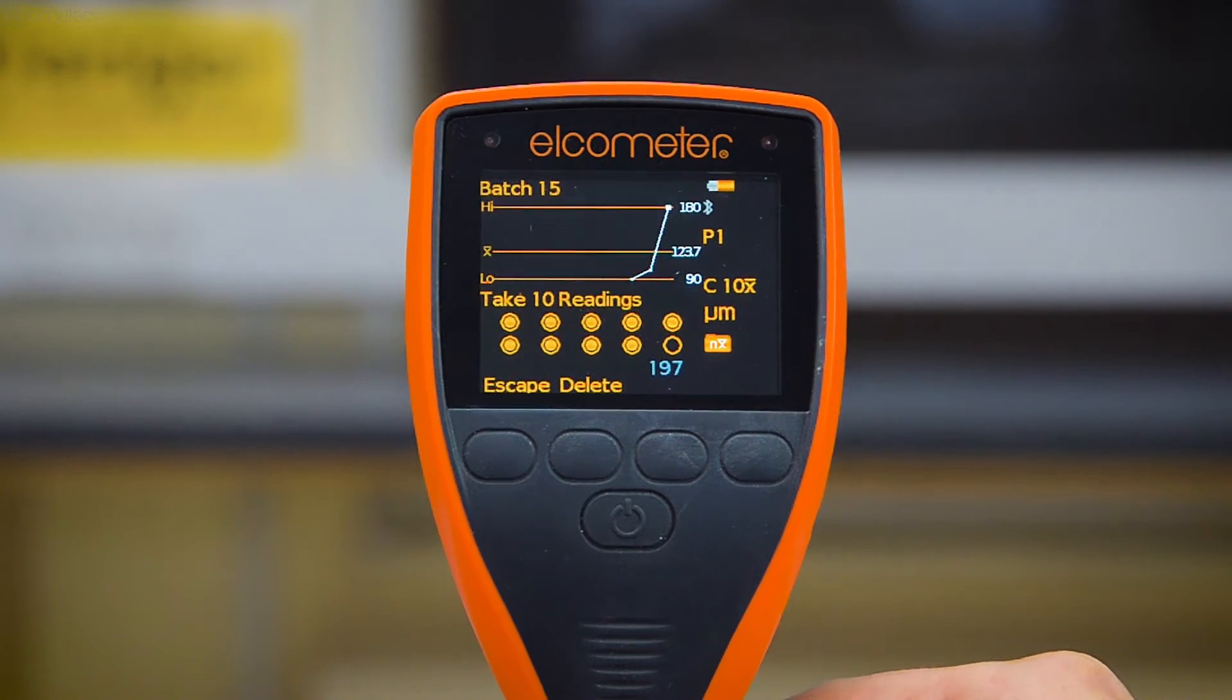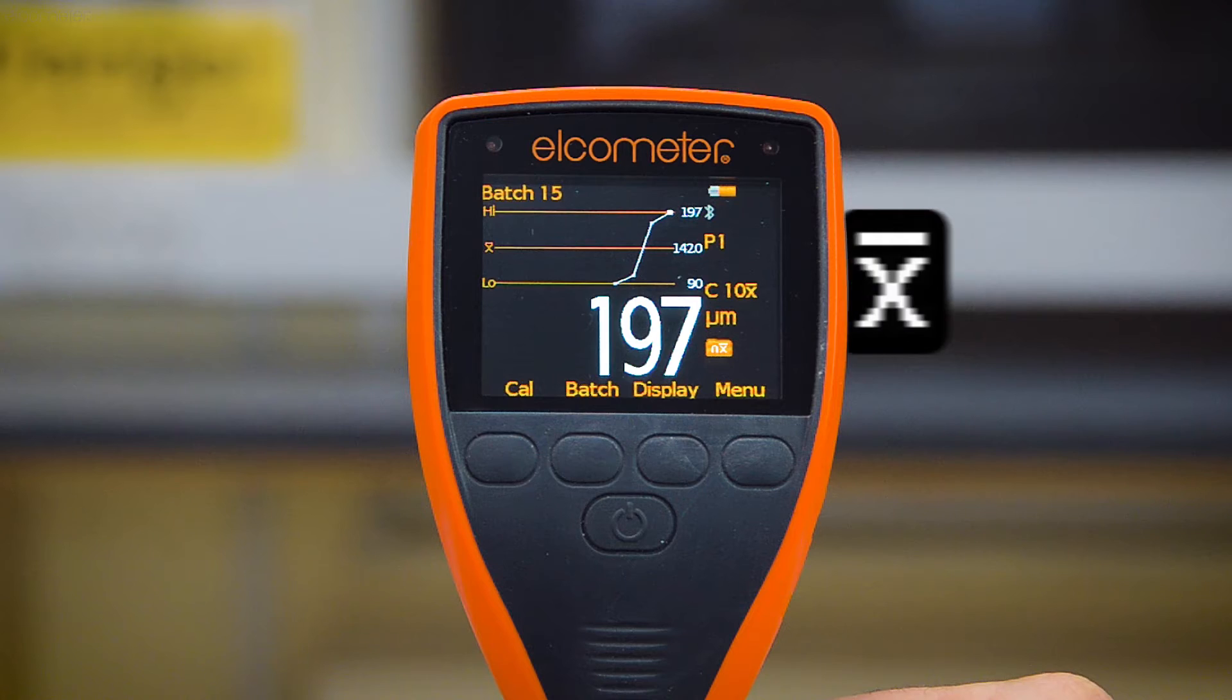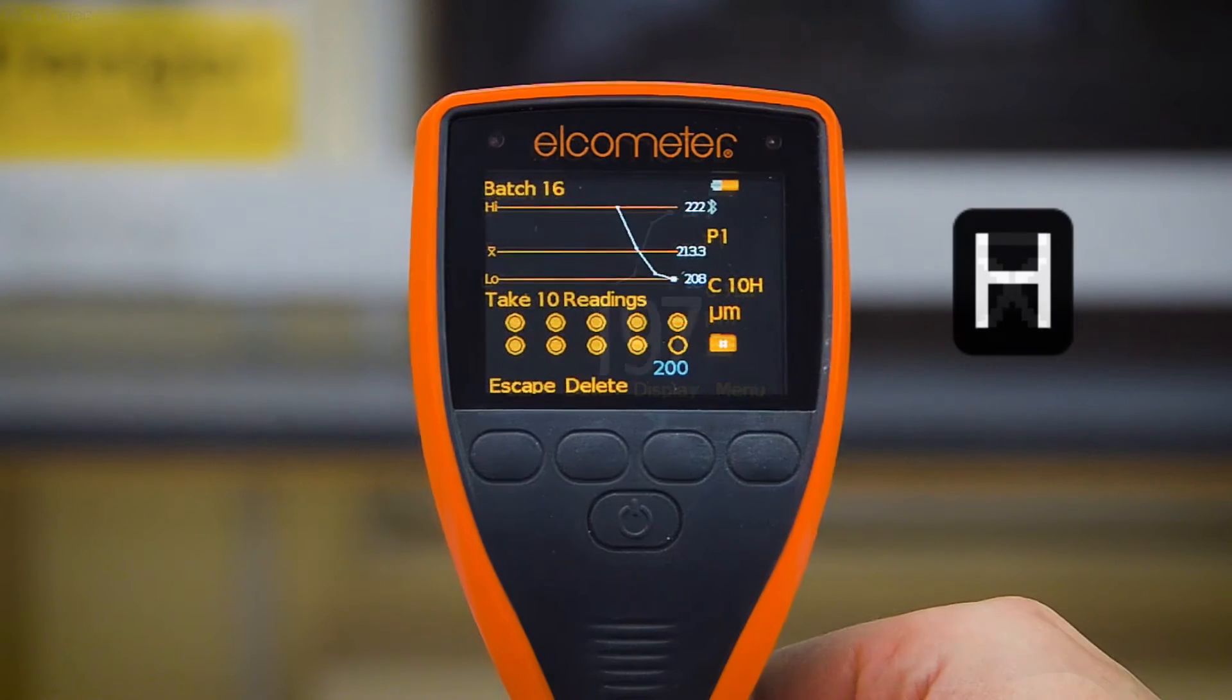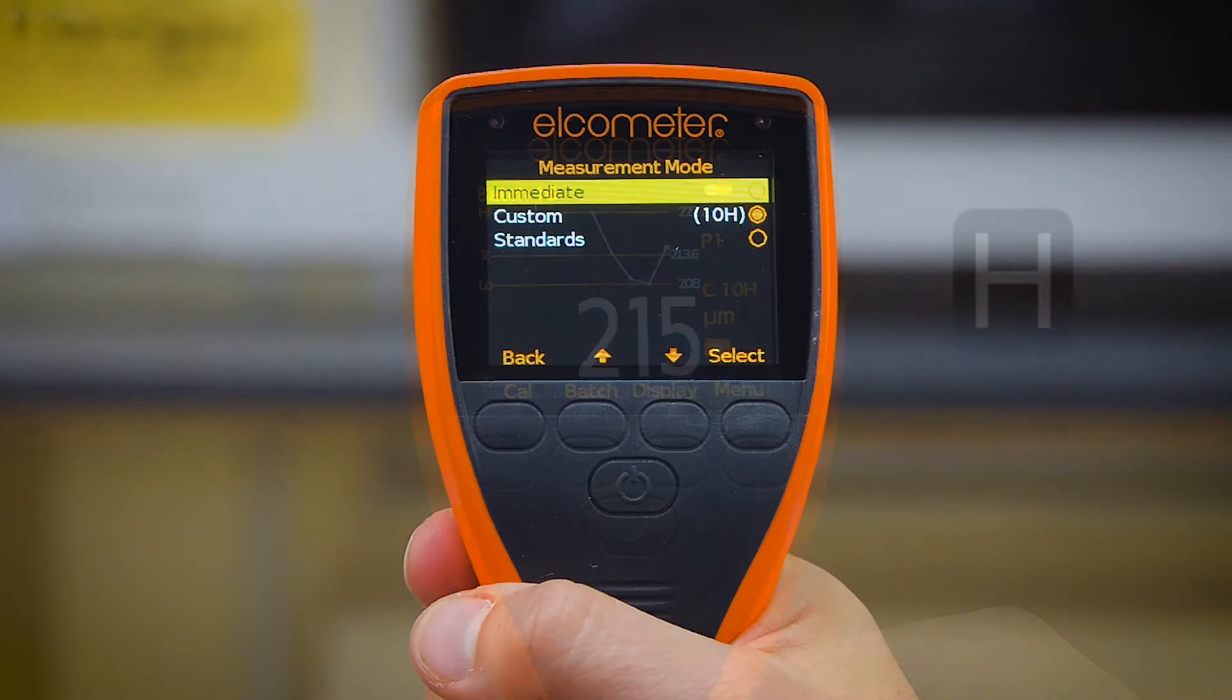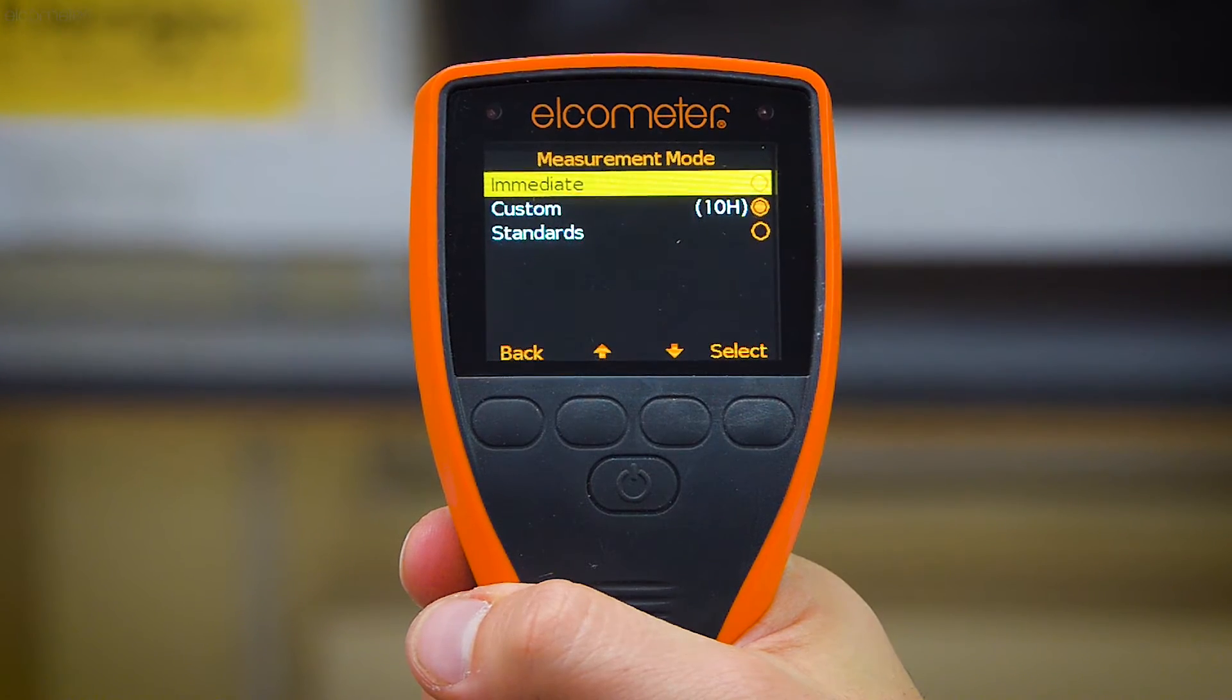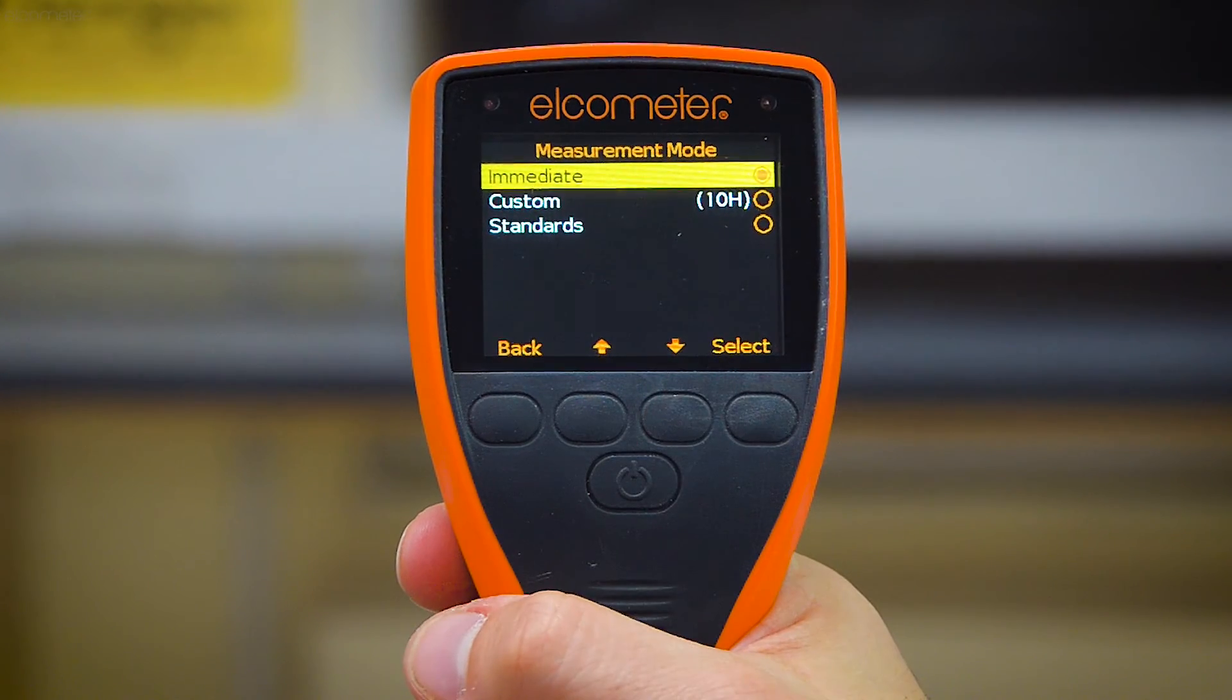The new Elcometer 224 digital surface profile gauge can store either the average or maximum peak to valley height reading into memory. Alternatively, if you want to store every value, simply select the gauge's immediate mode.